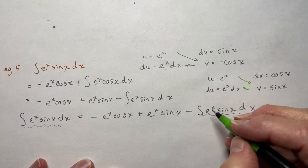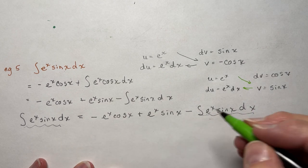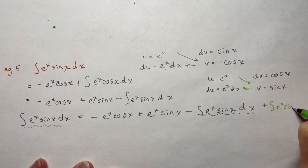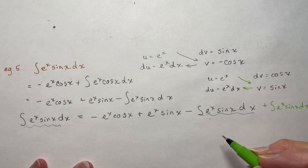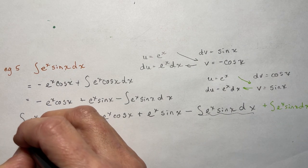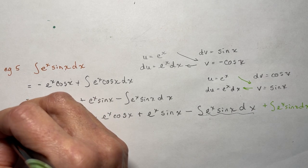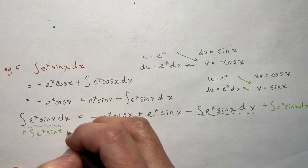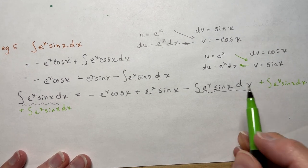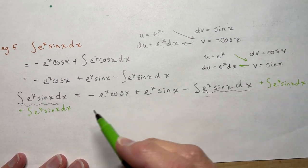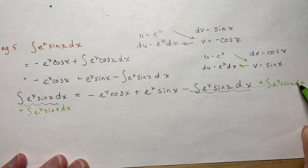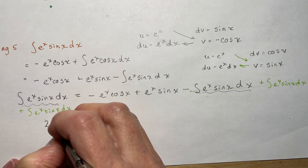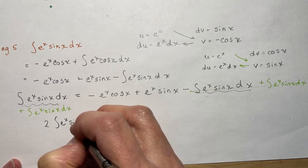So if I add these to both sides, this term on the right is going to go away, but I'm going to have two of these on the left side. So I'm going to have: 2·∫e^x·sin(x)dx equals e^x·sin(x) minus e^x·cos(x) plus c.